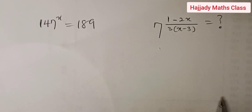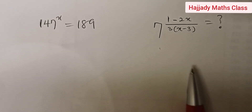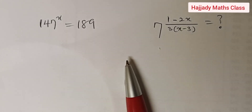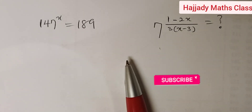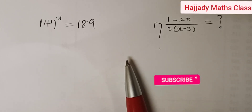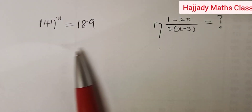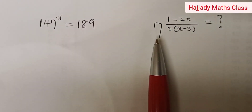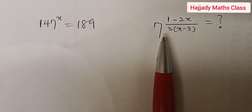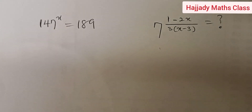Hello viewers, welcome to Agile the Math Class. Today we'll be solving this question on Olympiad. If this is the first time watching our videos, we say a very big thank you to you. Please don't forget to subscribe, and to our returning viewers, thank you very much. Today we have: 147 raised to power x equals 189, then find the value of 7 raised to power (1 minus 2x) over 3 into bracket (x minus 3).